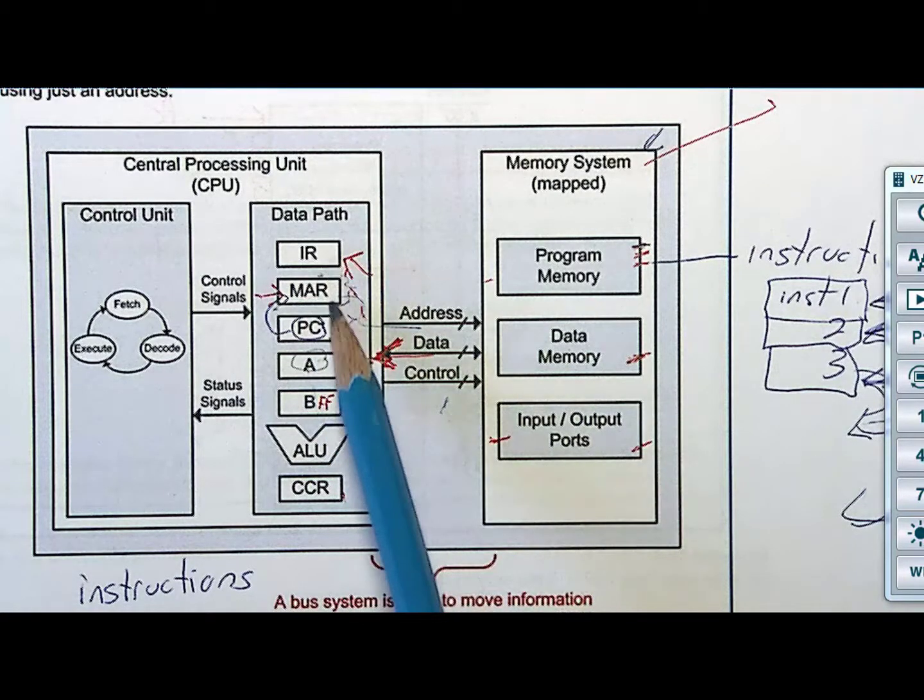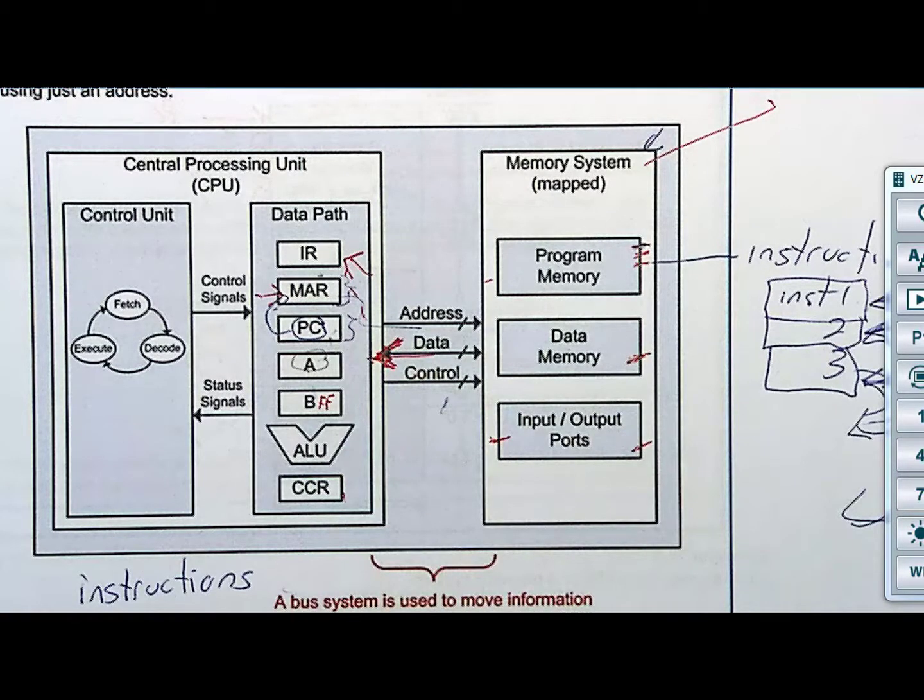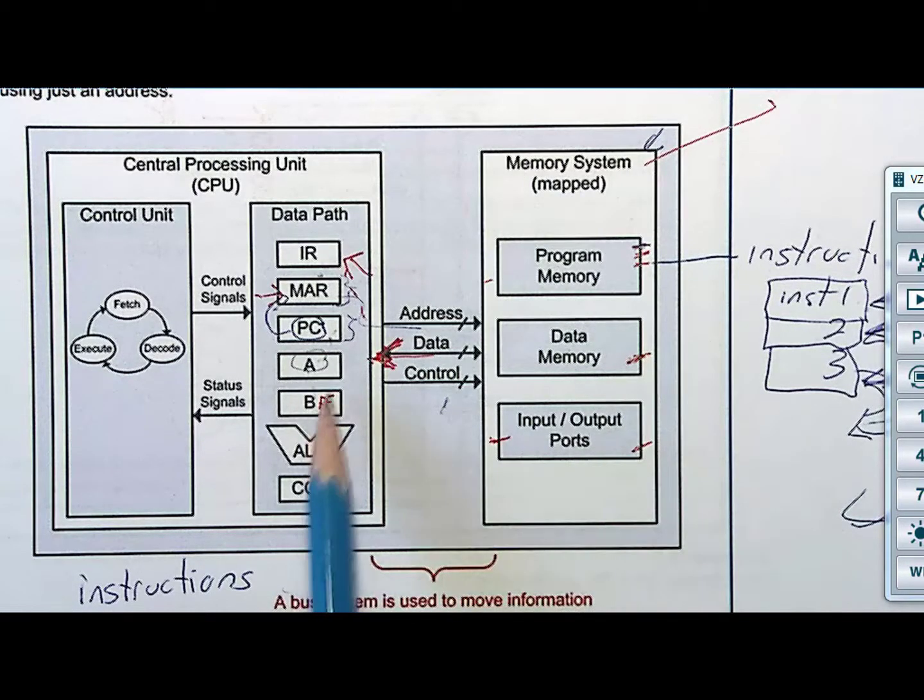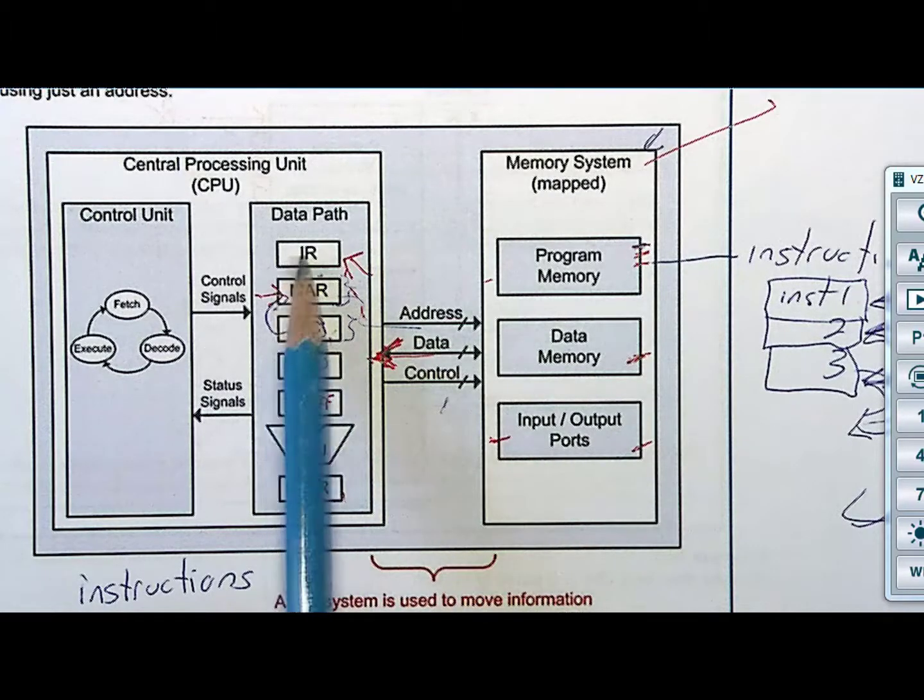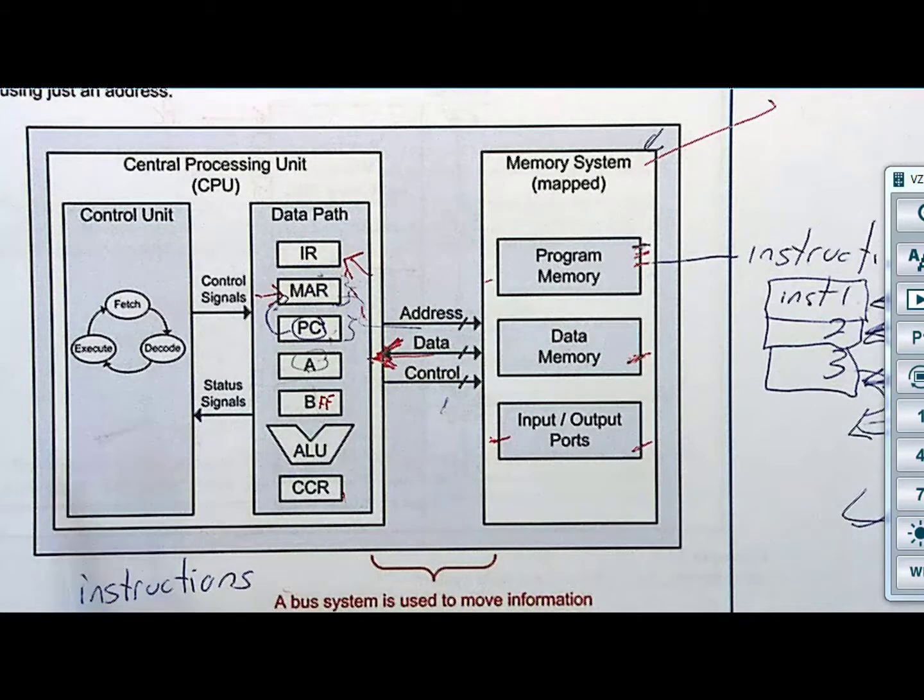These registers IR, MAR, PC, CCR, these are internal registers that are necessary to perform the fetch, decode, execute cycle, but they're not user registers. You don't get to mess with them with like switches and buttons. You can potentially put information into A and B with switches and buttons, but you don't mess with these guys. These guys are under the control of our control unit.